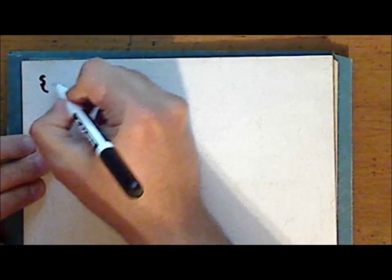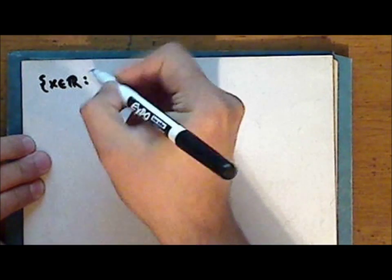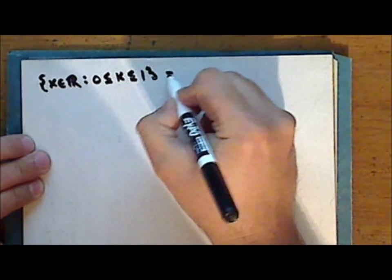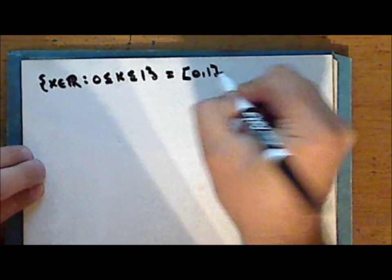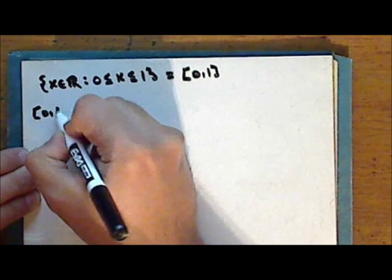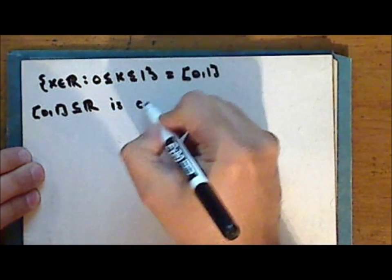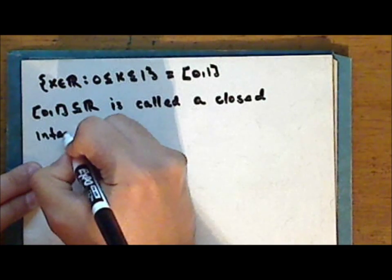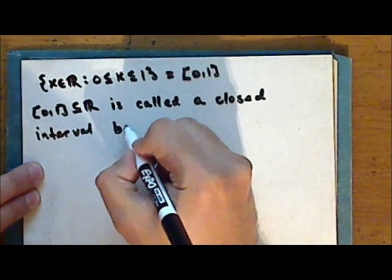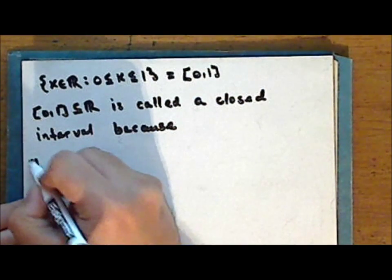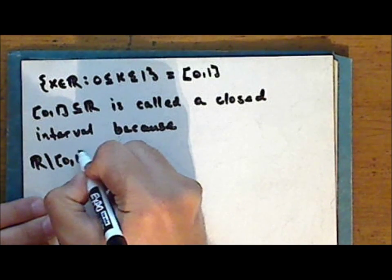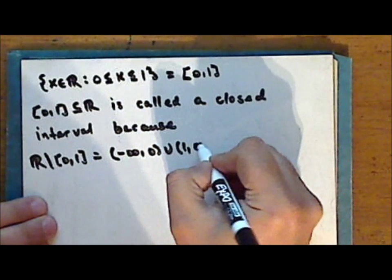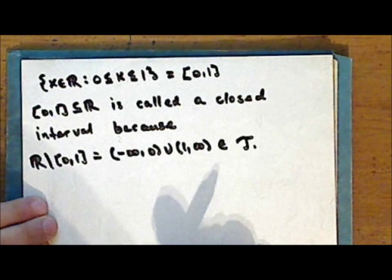In a similar way, the subset of the real line consisting of those real numbers greater than or equal to zero and less than or equal to one, we generally denote in interval notation using square brackets. This subset of the real line is called a closed interval because the complement of this subset, which is a union of open intervals, is in the standard topology on the real line.